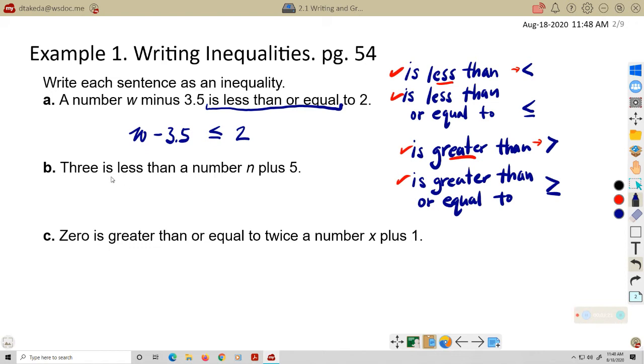S is less than a number N plus 5. So S is less than N plus 5. And again, they're just using the word plus here. So we know what symbol that is. They're not using the idea of something being increased by 5. They're calling it plus 5. So these are pretty easy examples.